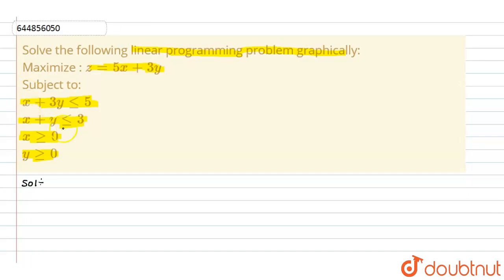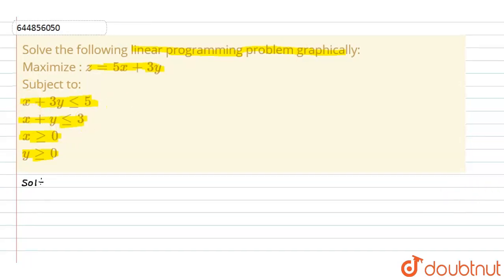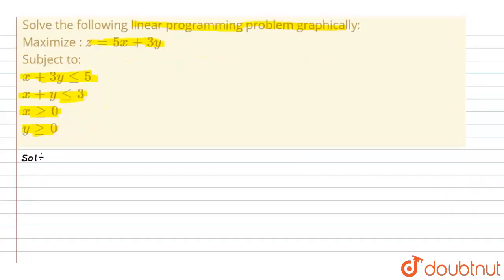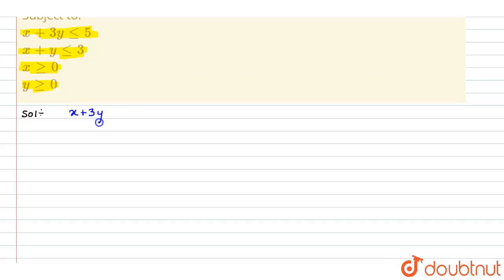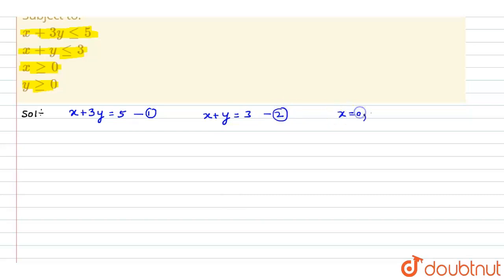We are given these linear inequalities. Now write these linear inequalities as corresponding equations. The corresponding equations are: equation 1 is x plus 3y equals 5, and equation 2 is x plus y equals 3. Also, we have x equals 0 and y equals 0.